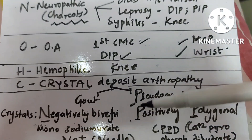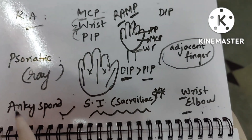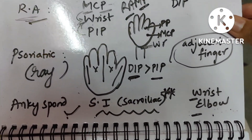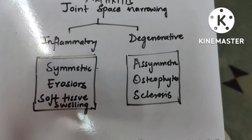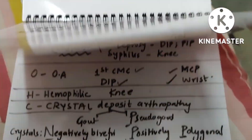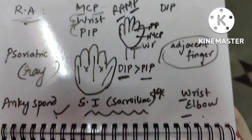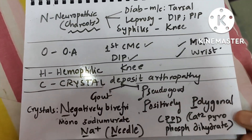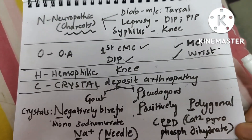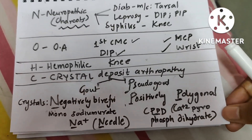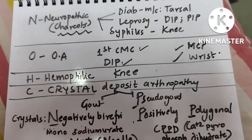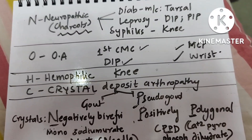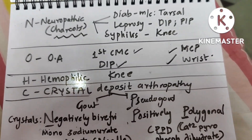That completes the NOTCH mnemonic and the PAIR conditions for arthritis. This is the summary of arthritis, the important joints involved, and the joints spared. A PDF of these notes will be shared on the Telegram channel, with links provided in the description below. Many other videos on must-know topics for NEET and INISET are also available on the channel.